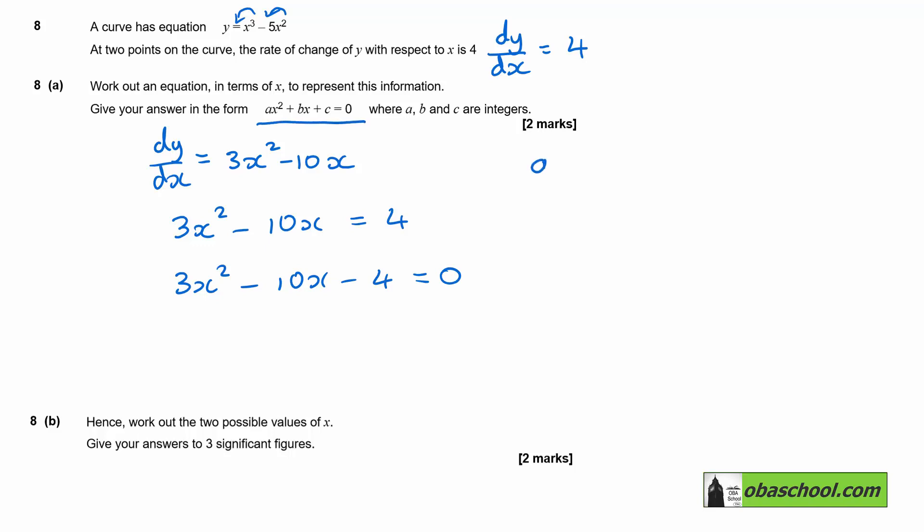And that gives us that a is equal to 3, b is equal to negative 10, and c is equal to negative 4.